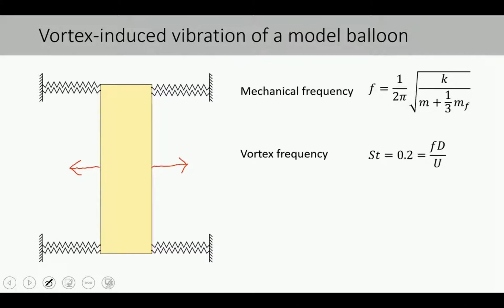Equation one is the resonance frequency of the mechanical system. Equation two is the vortex oscillation frequency based on a typical Strouhal number of 0.2. If the resonance frequency of the mechanical system coincides with the vortex shedding frequency then the balloon vibrates by the von Karman type of vortex shedding. It is therefore important to choose parameters carefully.